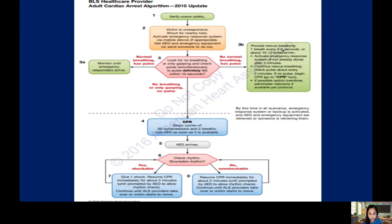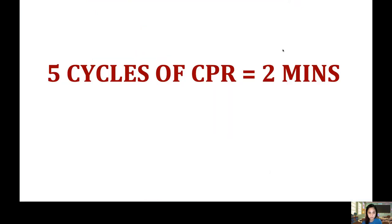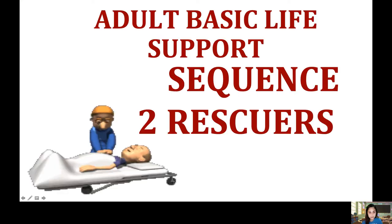This is the algorithm or the steps for adult cardiac arrest or basic life support. You need to do five cycles of CPR or two minutes.